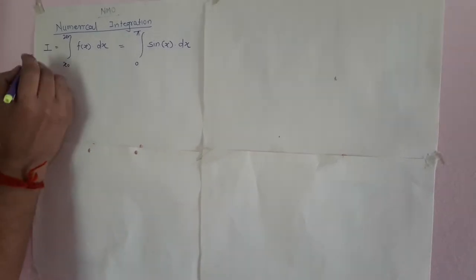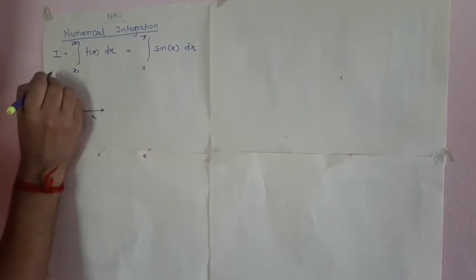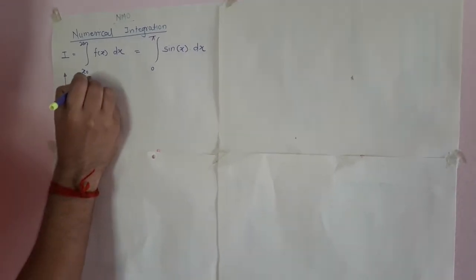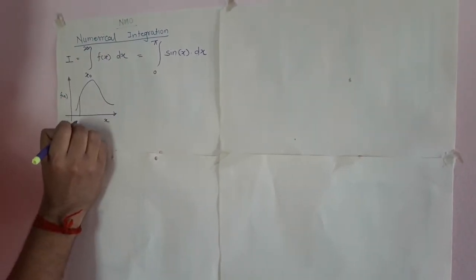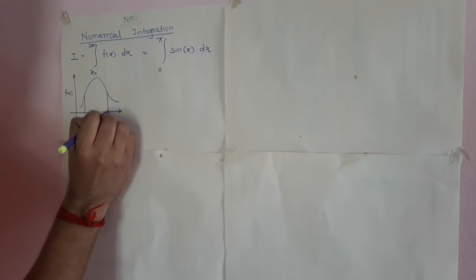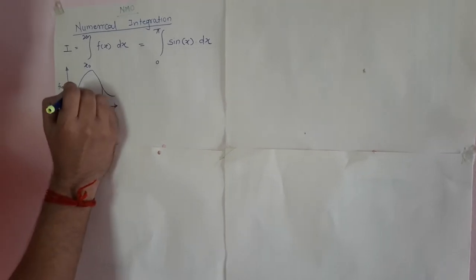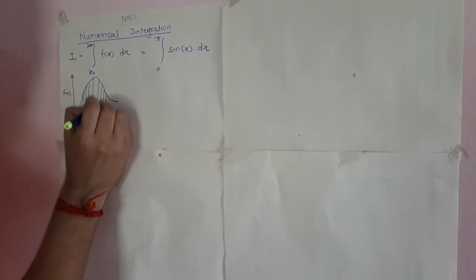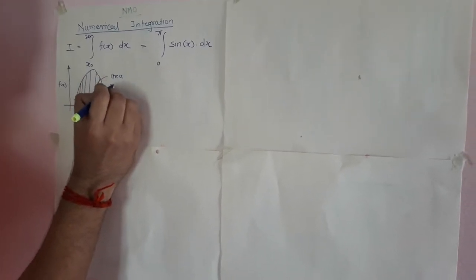Suppose I have plotted a curve of x versus f(x). Suppose this is the curve and the limits are x₀ to xₙ. Whatever the area under this curve is, this area is nothing but our integration.